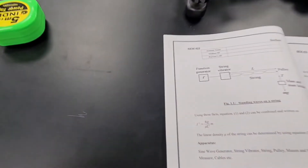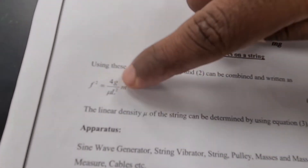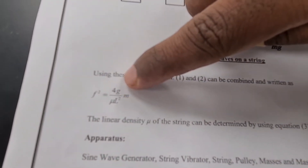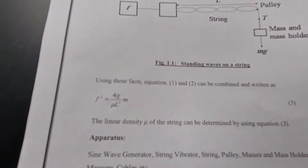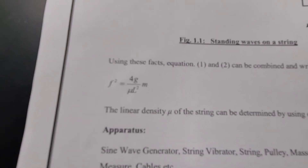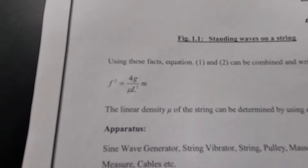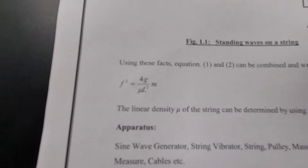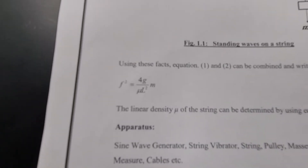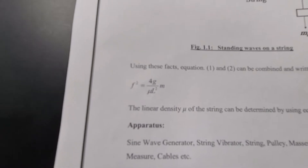The equation we are going to use is: frequency squared equals 4gm over μL squared. You have to rearrange this equation in terms of μ and then substitute the values to get the answer.